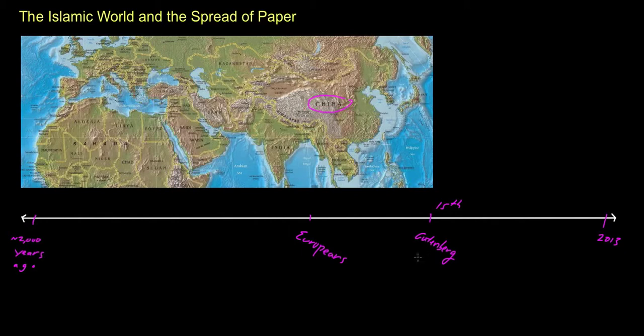Now, en route from China to Europe, paper and the knowledge of papermaking basically spread from other countries. For example, from China, it did spread to areas like Japan, Korea, and also to Central Asia as well. You can kind of see that paper started to spread this way in terms of how it was made. And roughly in about the 8th century, it was the Muslim world that discovered paper from the Chinese.